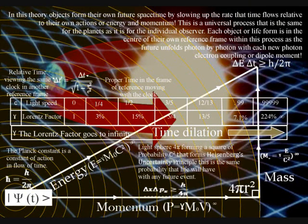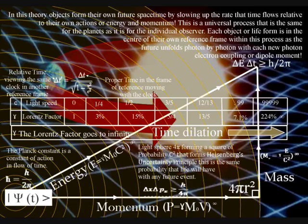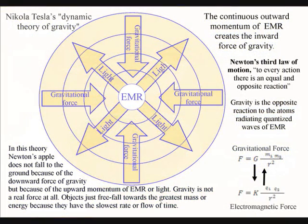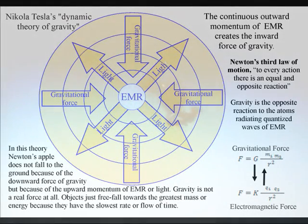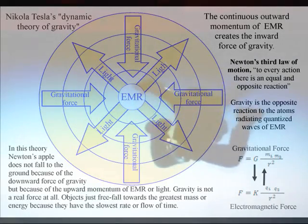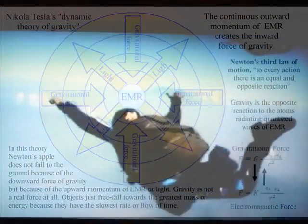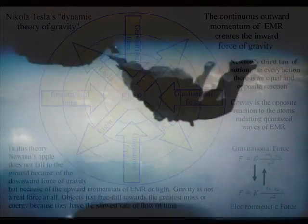This is true for the smallest creature as it is for the largest planet. Therefore Newton's universal law of gravity is part of this process. In this theory Newton's apple does not fall to the ground because of the downward force of gravity but because of the upward momentum of electromagnetic radiation or light. Gravity is not a real force at all — it is a secondary force to the electromagnetic force. Objects just freefall towards the greatest energy because it has the slowest rate of time or the greatest time dilation. I believe this can be seen in the mathematics with both the gravitational force and the electromagnetic force having the inverse square law.